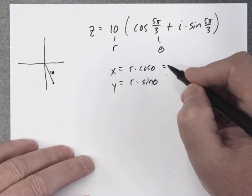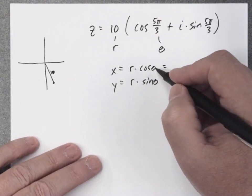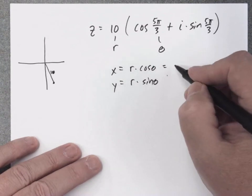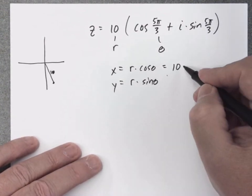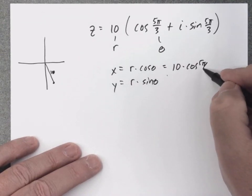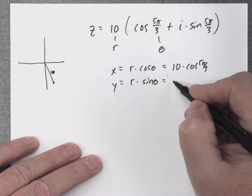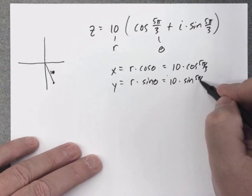Now the good thing is I don't have to think too much. I was going to say grab my calculator, but I'm not going to grab my calculator because these are special angles. So R, 10 times cosine of 5 pi over 3, 10 times the sine of 5 pi over 3.